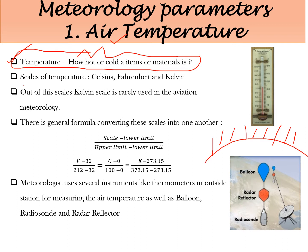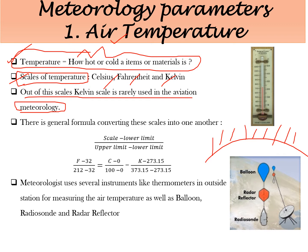There are three types of temperature scales. The first scale is Celsius, the second is Fahrenheit, and the third is Kelvin. Kelvin is used rarely in aviation meteorology. So we will mainly deal with Celsius or Fahrenheit scales. There is a general formula used to convert these scales: the scale value minus the lower limit, divided by the upper limit minus the lower limit.